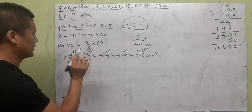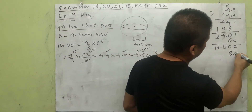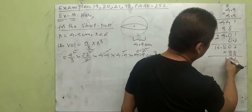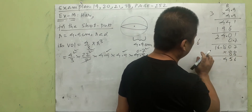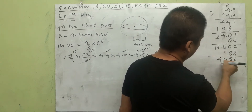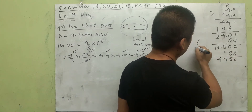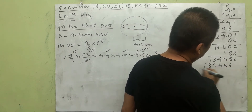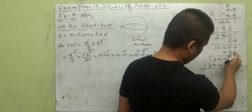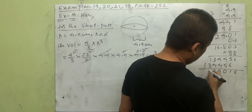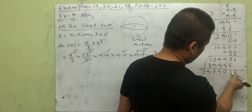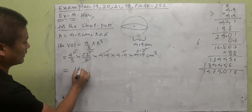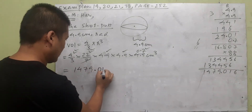After careful multiplication of the numerator terms — combining 4/3 × 22/7 × 4.9³ — we work through the arithmetic step by step: 8 × 7 is 56, 8 × 8 is 64, 8 × 6 is 48, and so on through all digits. After completing all multiplications, the numerator comes out to approximately 1479.016, divided by 3.